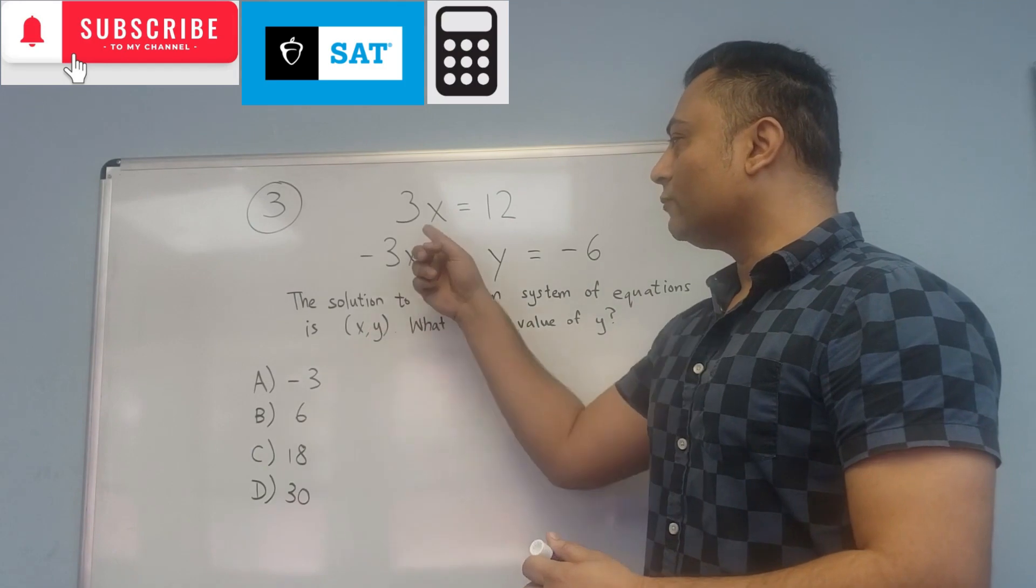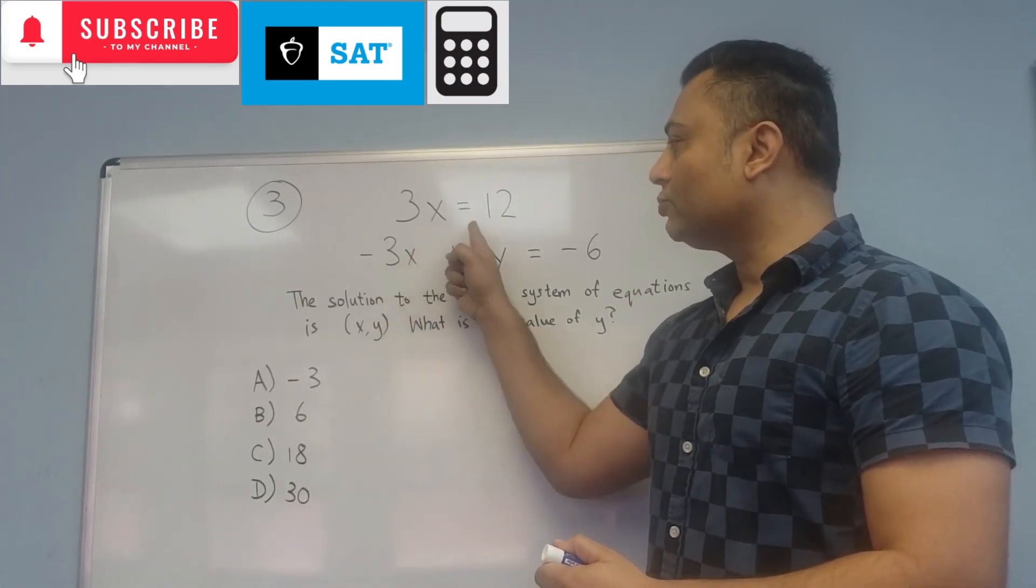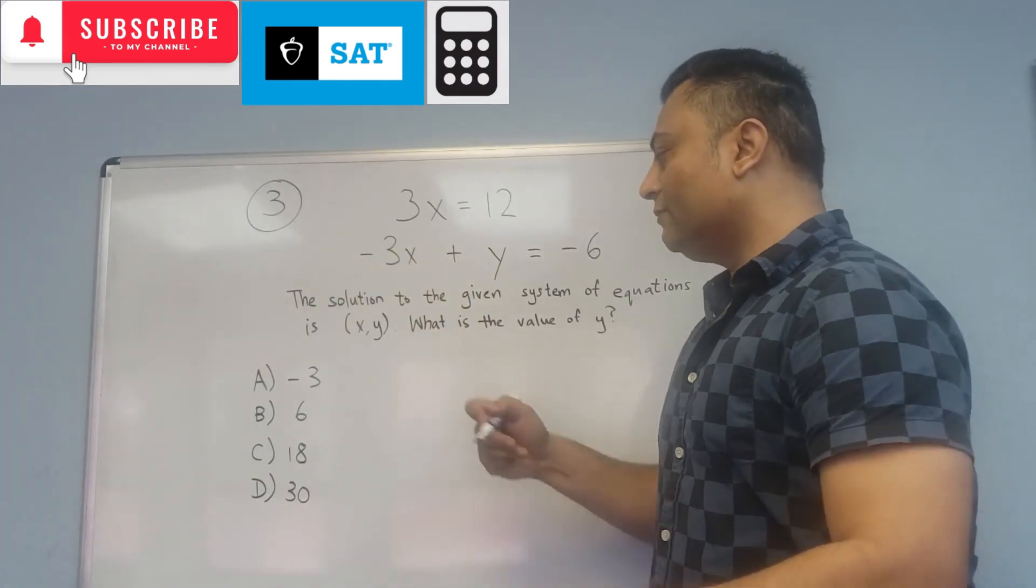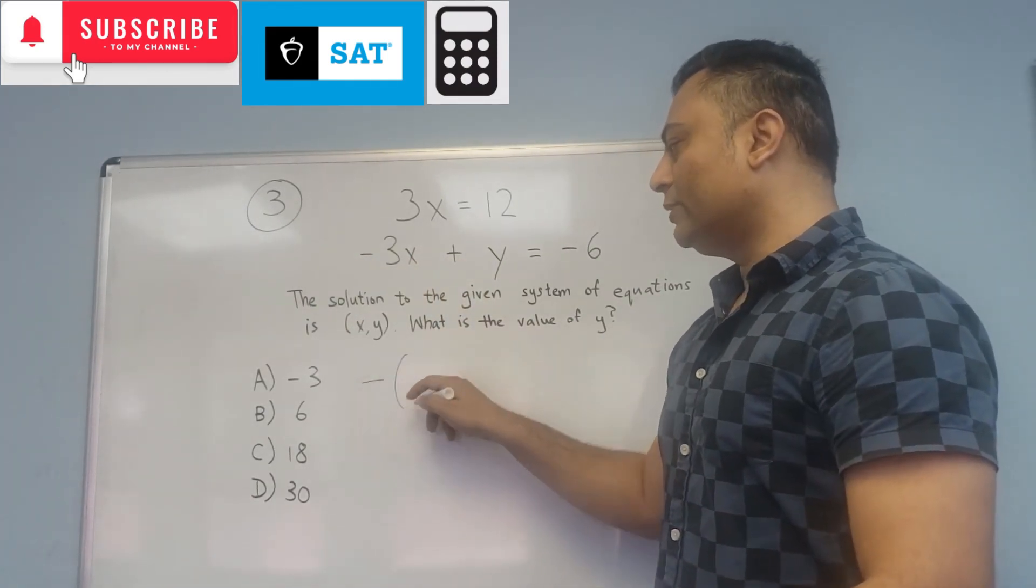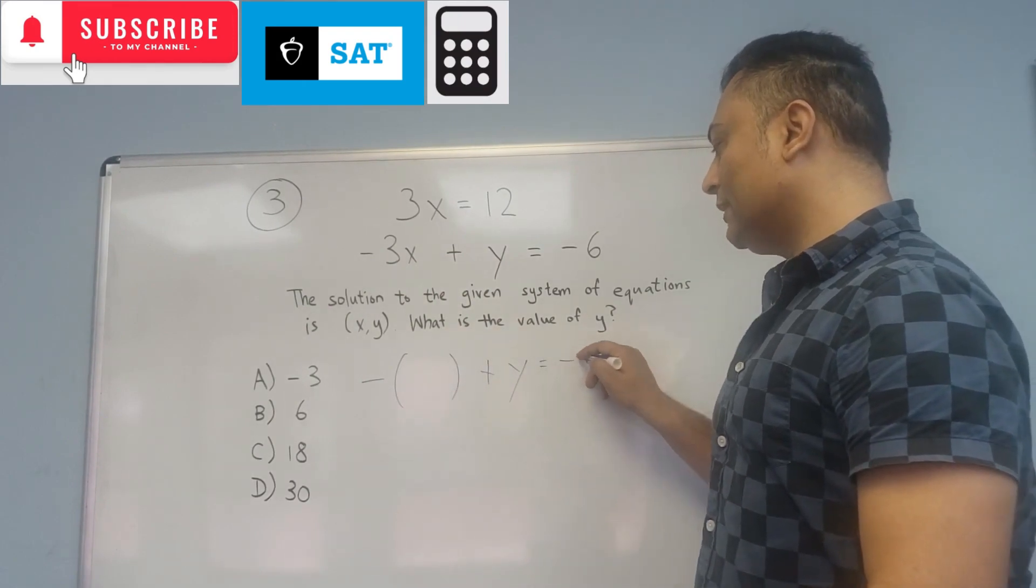Now we could solve for x, but we don't have to, because 3x equals 12, and there's a 3x right there with a negative. So you have negative 3x plus y equals negative 6.